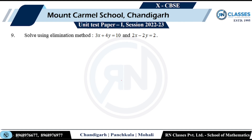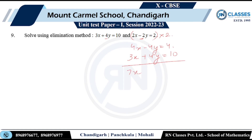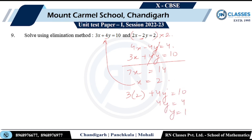Solve using elimination. Making the coefficient of y the same — multiply the first equation by 2: 4x minus 4y equals 4. Second equation: 3x plus 4y equals 10. Adding them: 7x equals 14, so x equals 2. Substituting into the second equation: 3(2) plus 4y equals 10, so 4y equals 4, giving y equals 1. Solution: x equals 2, y equals 1.